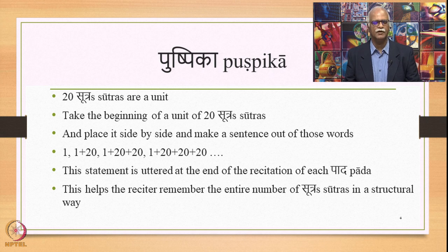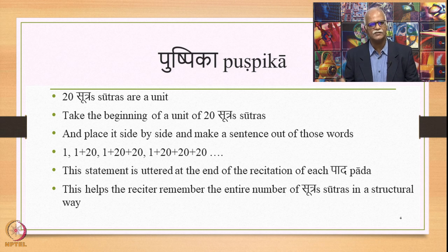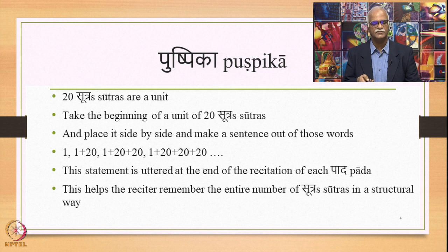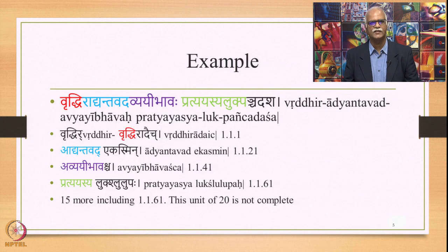The purpose of this statement is that it helps the reciter to remember the entire number of Sutras in a particular unit in a structural way. So I can refer to the 19th Sutra of the first unit of 20 or the 7th Sutra in the second unit of 20 and things of that kind. It is easier for a reciter to remember a unit of 20 Sutras and then number the Sutras inside the unit accordingly. This was one device developed by the reciter.